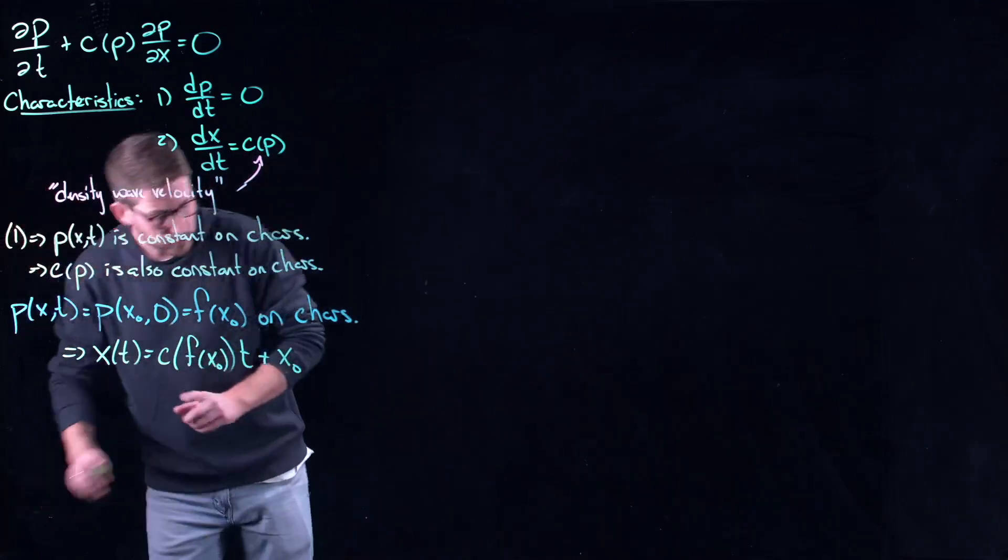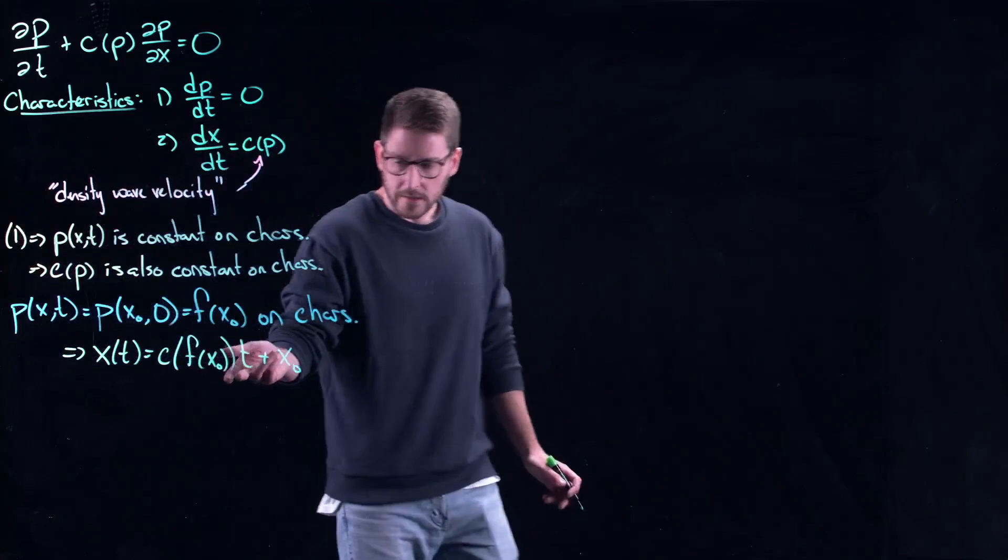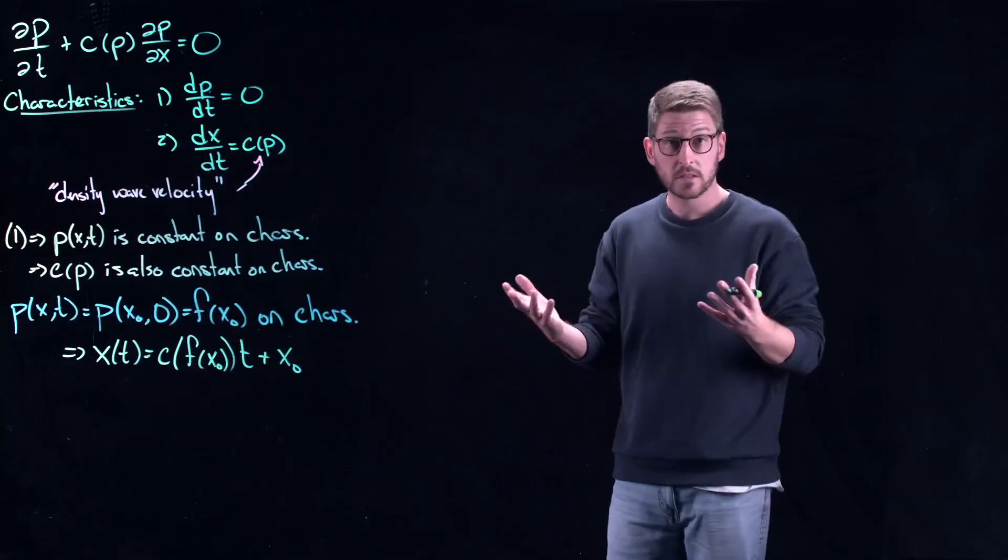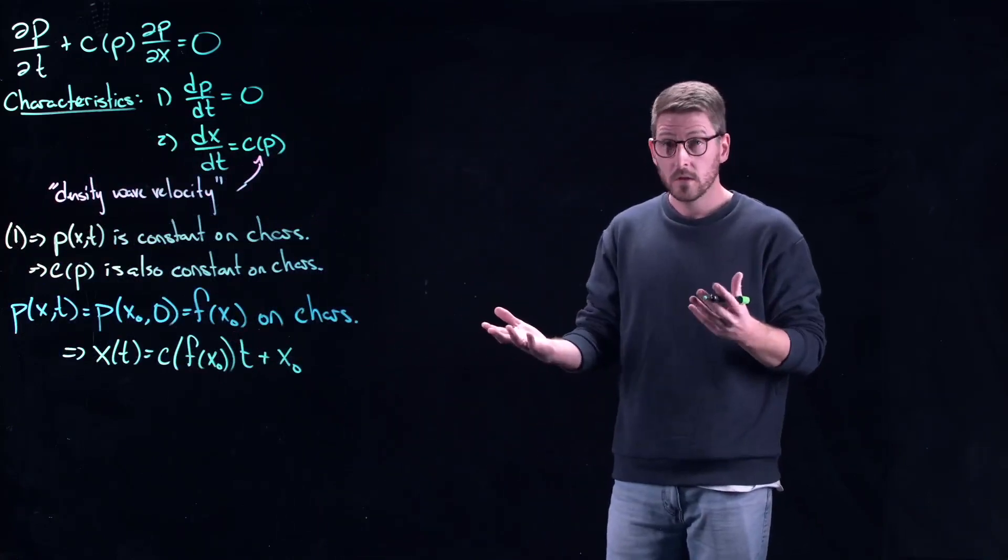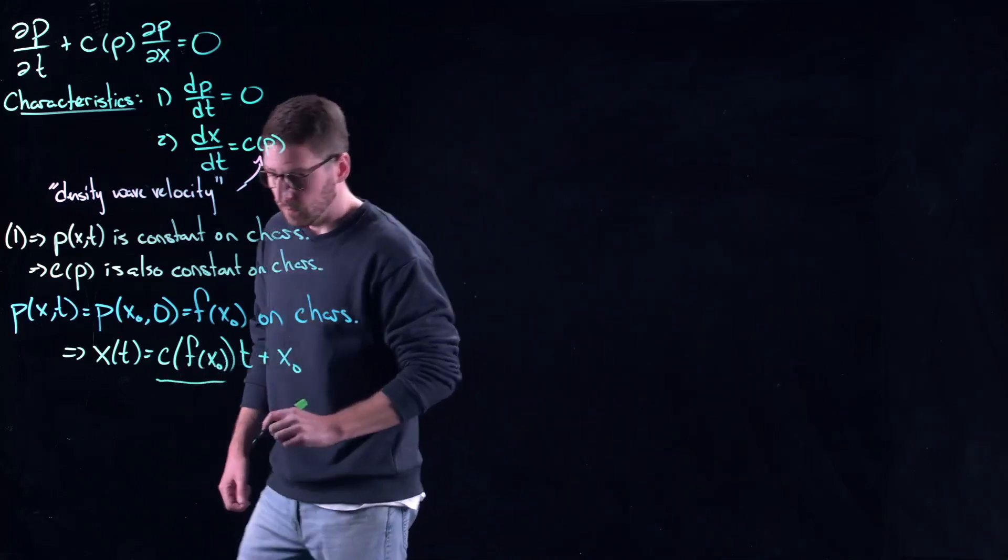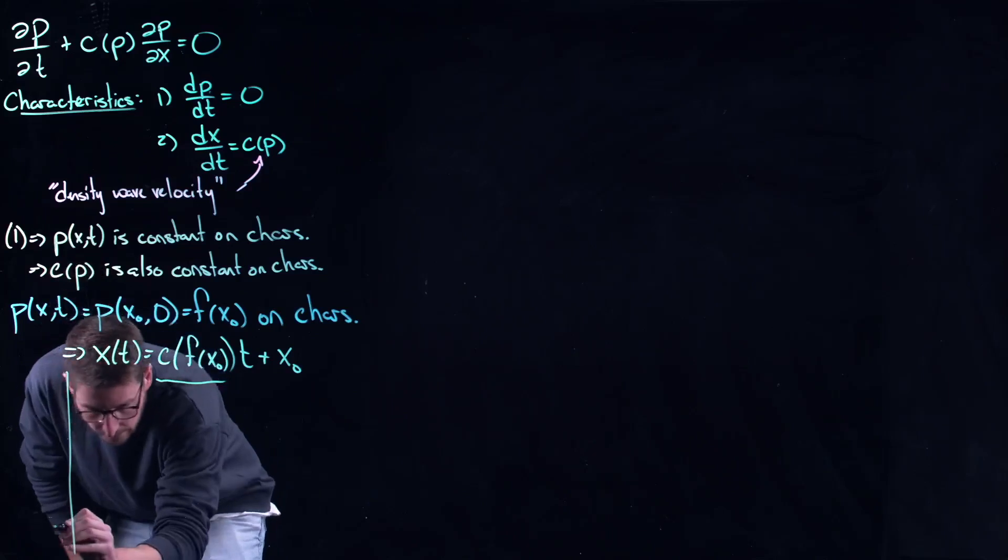What I really want you to appreciate here is that these are all straight lines, so it's not as complicated as some of the characteristic models that we've seen before. But they might have different slopes.